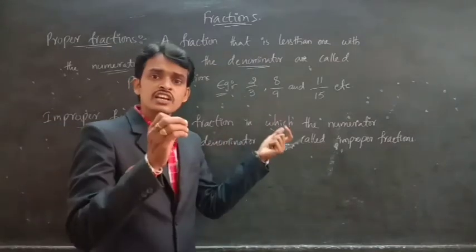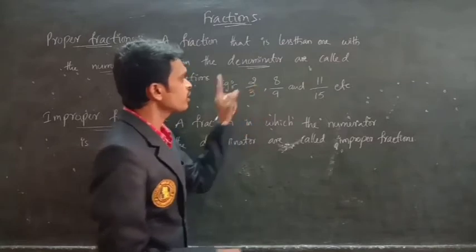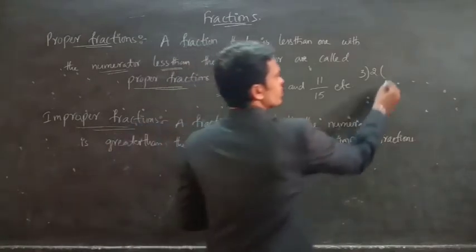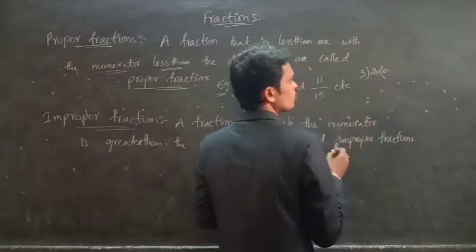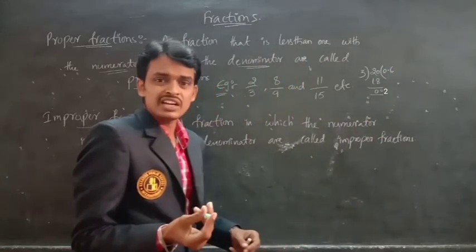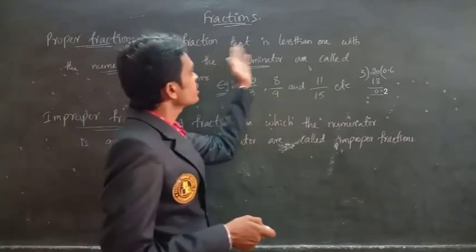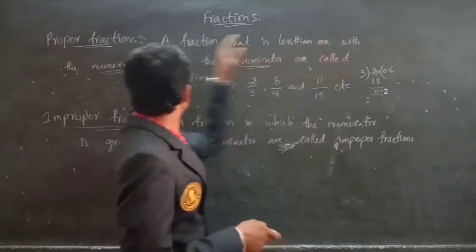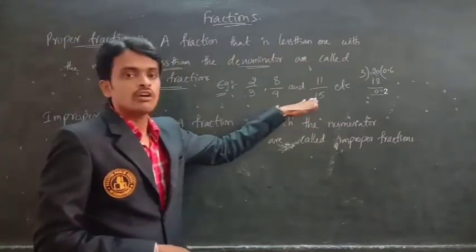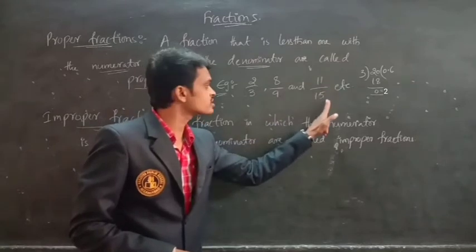These fractions are always less than 1. Look at 2 by 3 — if we divide, we get 0.6, which is less than 1. So the fraction is less than 1. Fractions in which the numerator is less than the denominator are called proper fractions. 2 is less than 3, 8 is less than 9, and 11 is less than 15. So always the numerator is less than the denominator.